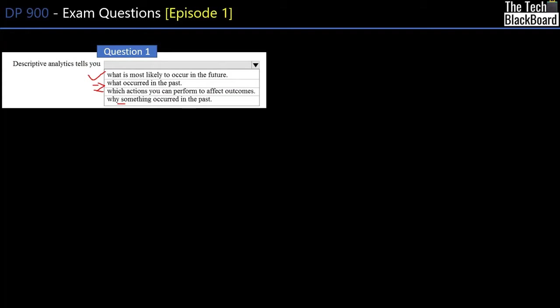So there are four kinds of analytics: descriptive, diagnostic, predictive, and prescriptive. Descriptive analytics tells you what is happening or what occurred in the past. Thus the correct answer is 'what occurred in the past.' With this understanding, let's move to our second question.